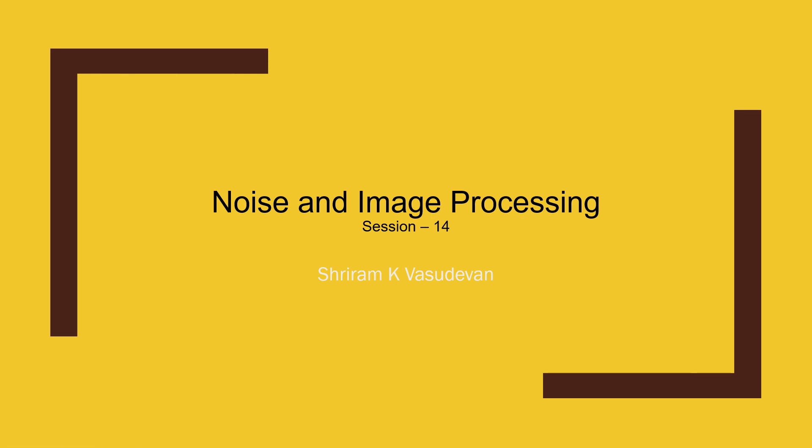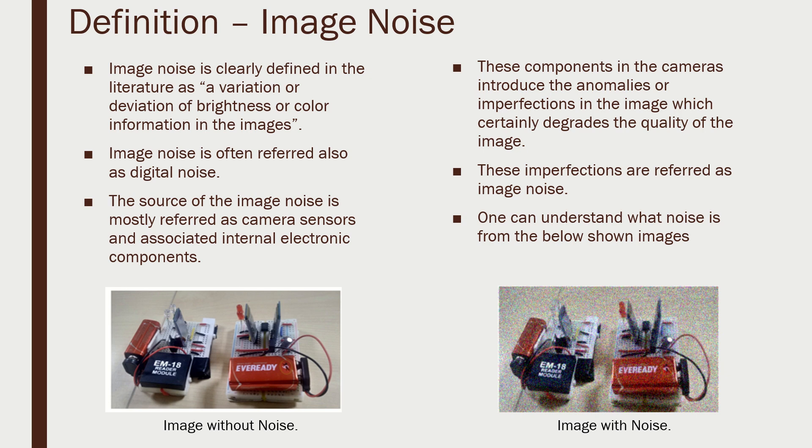Welcome back to the image processing playlist. We are going to talk about noise in image processing. Noise is a major problem in image processing — not just in signal processing but in images as well. Image noise is nothing but a variation or deviation of brightness or color information in an image. If there is a deviation from the expected level of brightness and color, we call it noise.